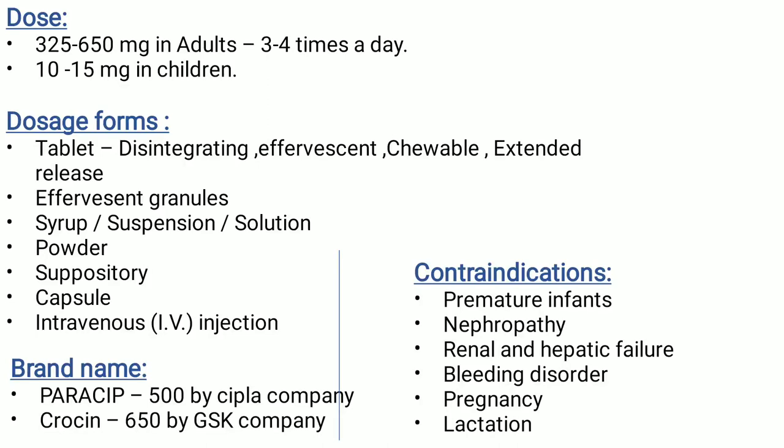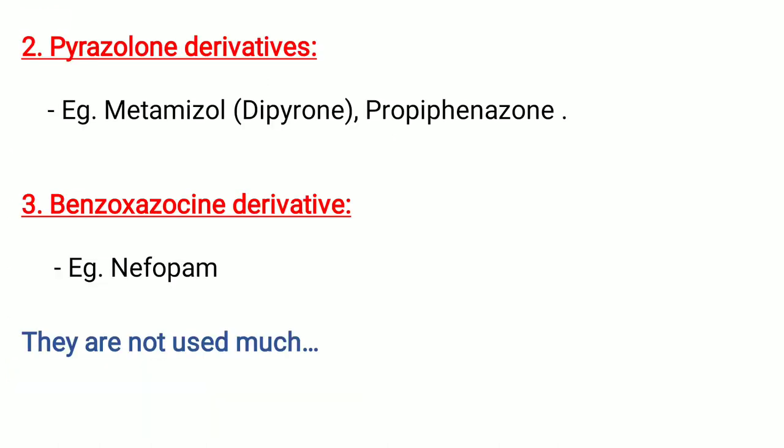Contraindications of paracetamol: premature infants, nephropathy, renal and hepatic failure, bleeding disorder, pregnancy, and lactation. Second is pyrazolone derivatives — examples are metamizole, dipyrone, and propifenazone. Third category is benzoxycane derivative — example is nefopam. These drugs of these two categories are not used much.